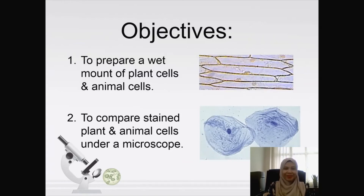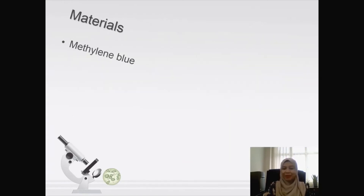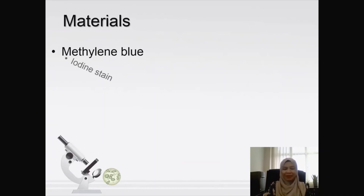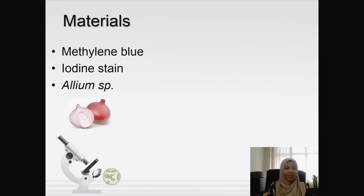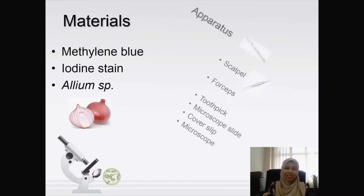Shown here are images of plant cells and animal cells under a microscope. The materials needed are two types of staining reagent — methylene blue and iodine stain — and also a plant specimen, which is onion. For apparatus, you need a scalpel and forceps.